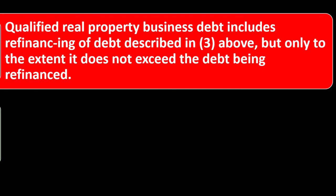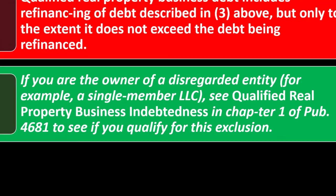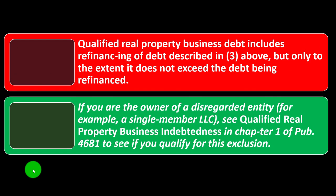Qualified real property business debt includes refinancing of the debt described above, but only to the extent it does not exceed the debt being refinanced. If you are the owner of a disregarded entity — for example, a single-member LLC — see qualified real property business indebtedness in chapter one of Publication 4681 to see if you qualify. These publications can be found on the IRS website at IRS.gov.